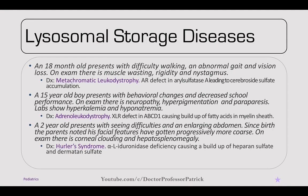A 15-year-old boy presents with behavioral changes and decreased school performance. On exam, there's neuropathy, hyperpigmentation, and paraparesis. Labs show hyperkalemia and hyponatremia — this is adrenoleukodystrophy. It's an X-linked recessive defect in ABCD1, causing a buildup of fatty acids in the myelin sheath. Similar to metachromatic leukodystrophy, but look for adrenal deficiencies: the hyperkalemia and hyponatremia.